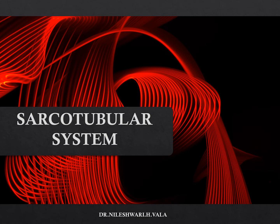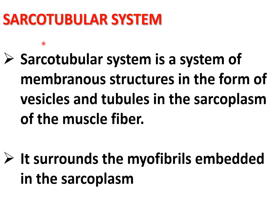Welcome to this video about the sarcotubular system. The sarcotubular system is a system of membranous structures in the form of vesicles and tubules in the sarcoplasm of muscle fiber, and it surrounds the myofibrils that are embedded in the sarcoplasm.